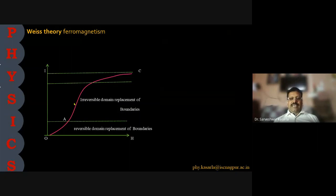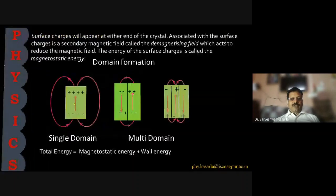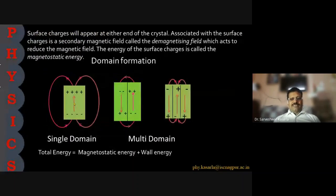In the irreversible stage, the boundaries are replaced and it is an irreversible process — if you reduce the magnetic field, the domains cannot reform. The third region is domain rotation, where the entire domain orients along the external field. Since magnetism originates from electricity, surface charges appear at the end of the crystal. For a single domain, the charge distribution appears as shown, and for a multi-domain, it is as shown in the figure. The total magnetic energy equals the magnetostatic energy plus the wall energy.